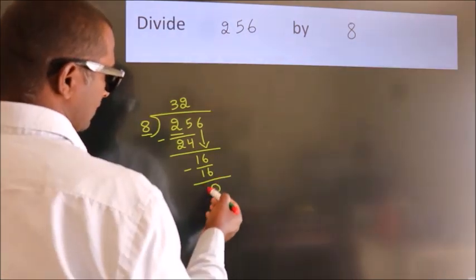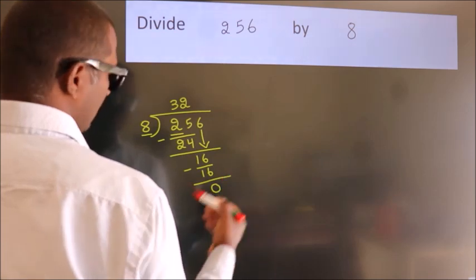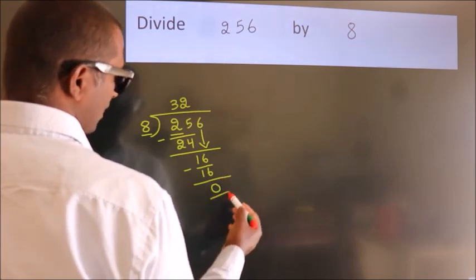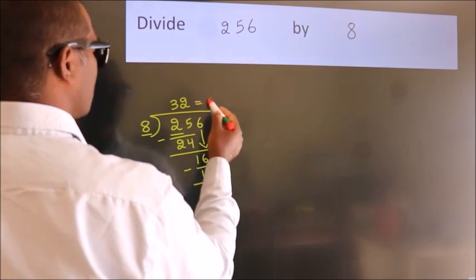After this, no more numbers to bring down. And, we got remainder 0. So, this is our quotient.